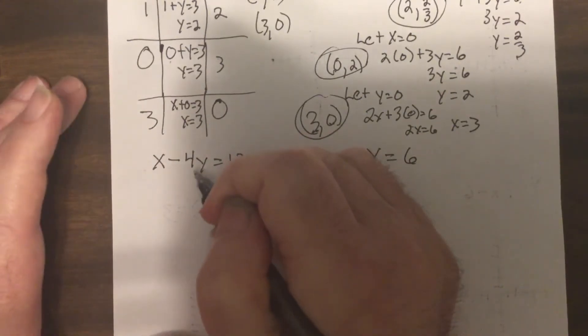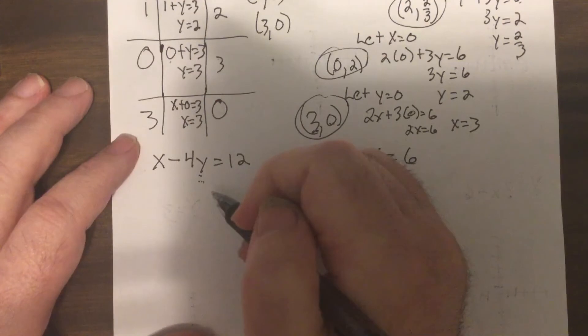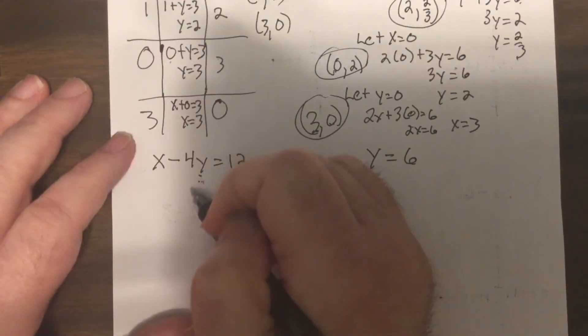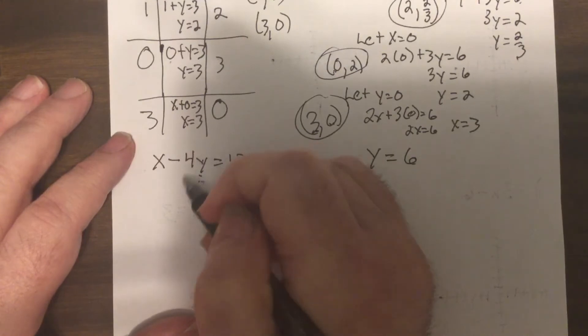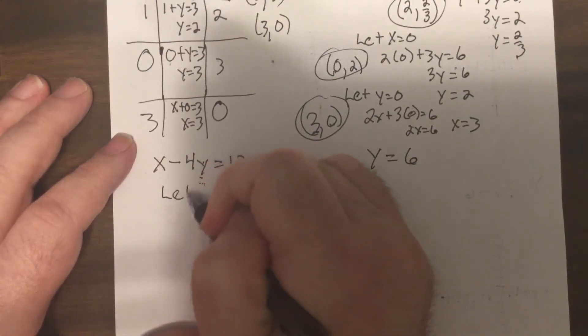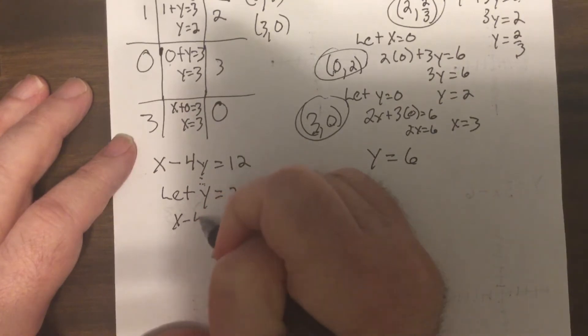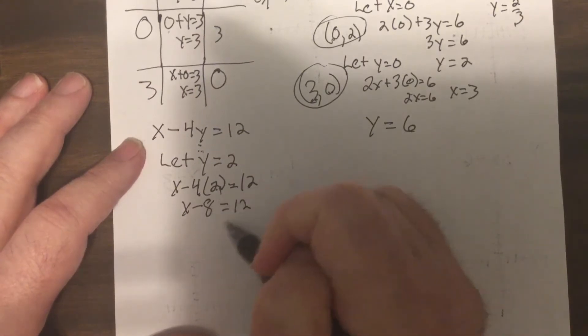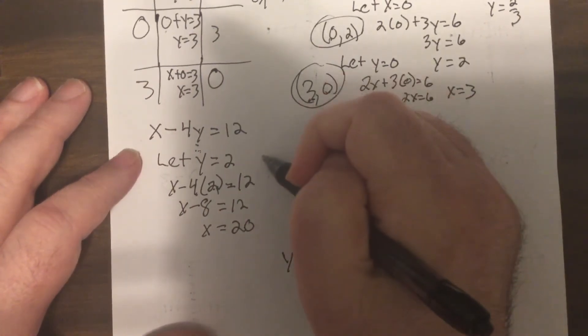So my three ordered pairs. Do this one by yourself, freeze the video, find three ordered pairs, and then plug it back in. Okay, so I'm gonna put two in for Y. Let Y equal two. Just picked it. Why did I pick it? I have no idea, don't know, no idea.